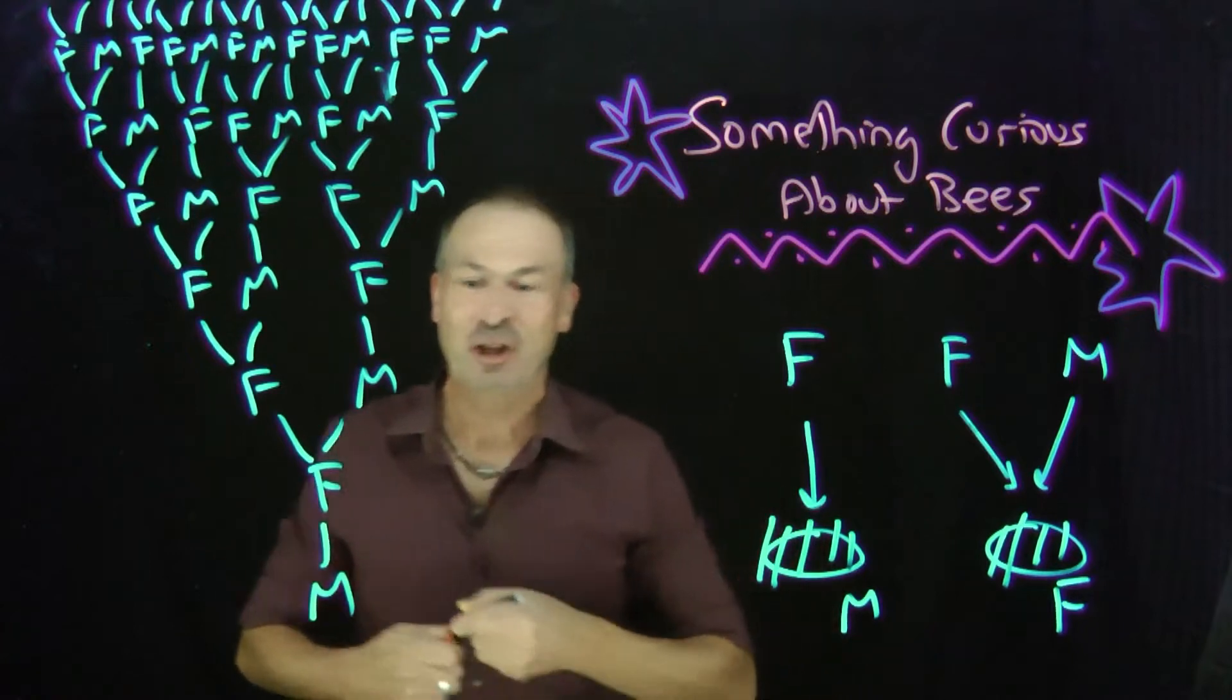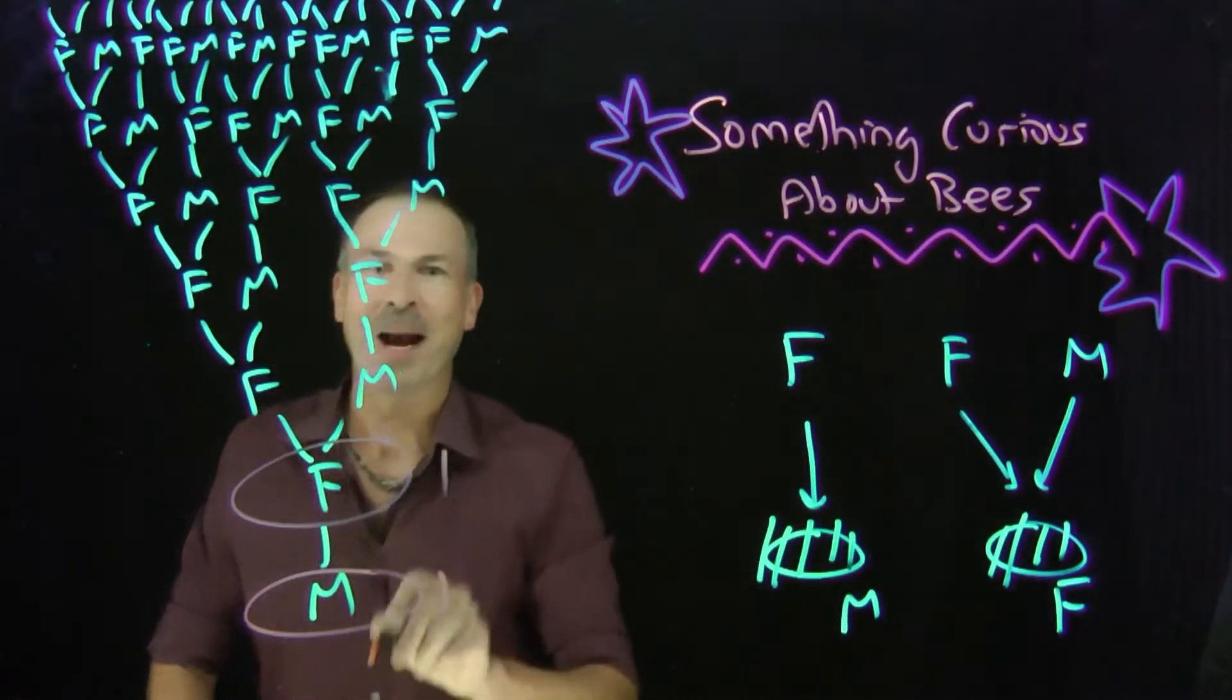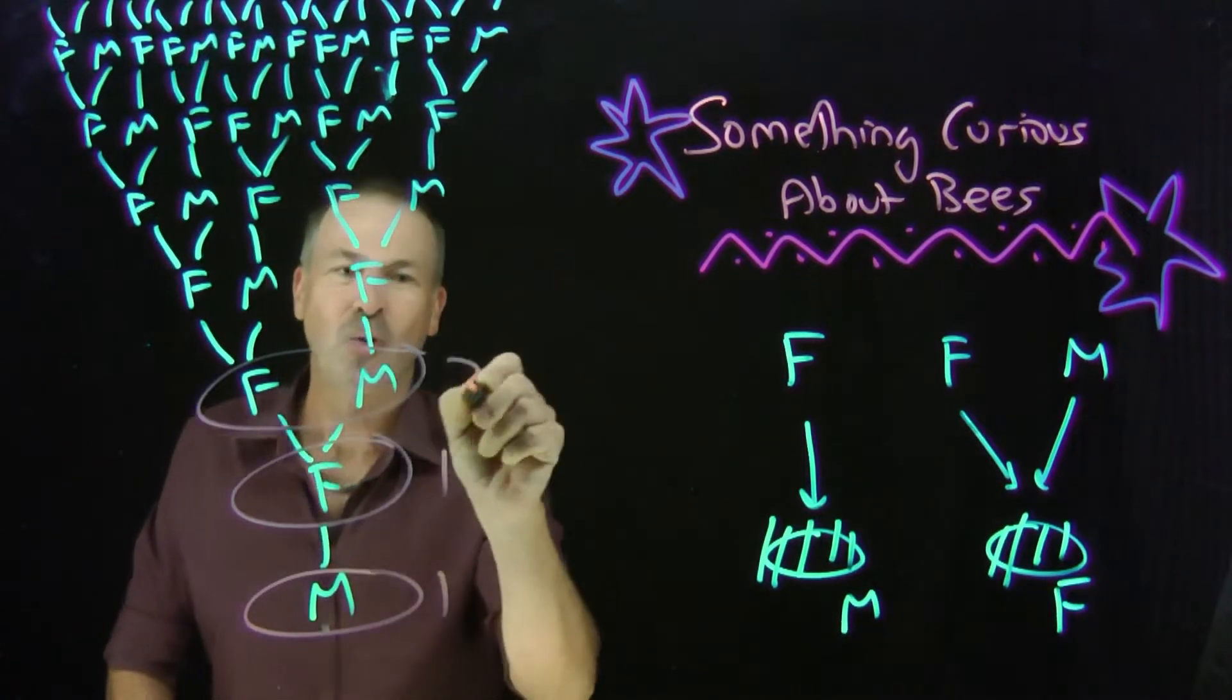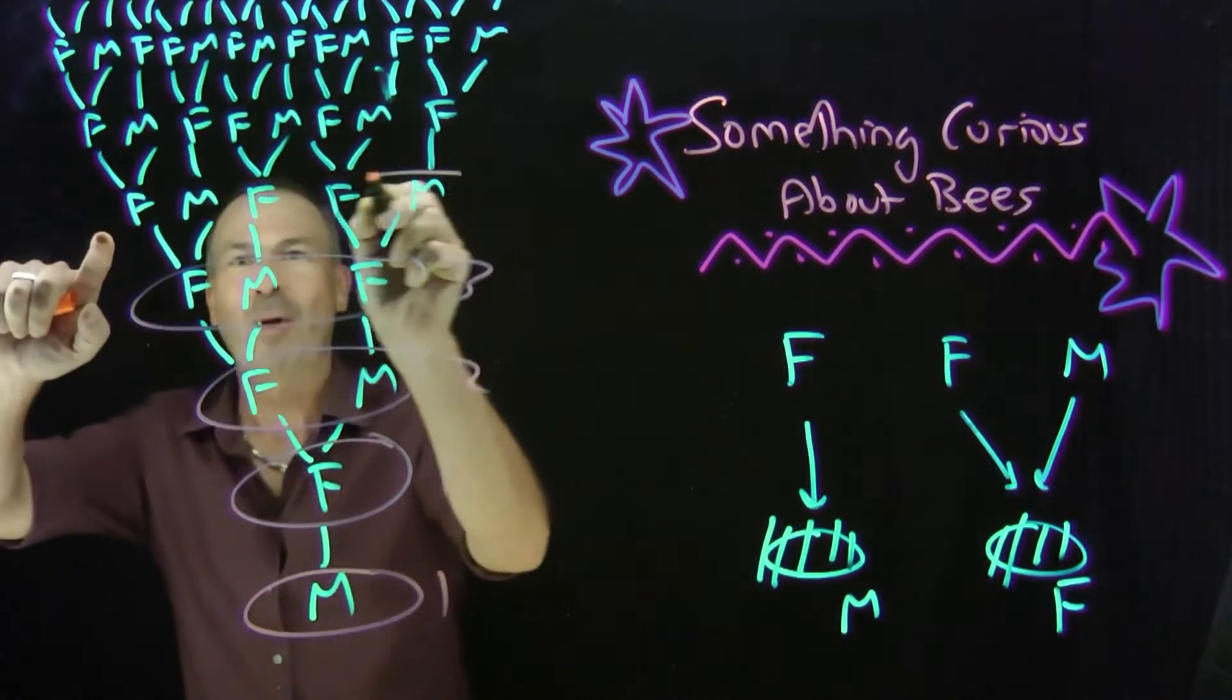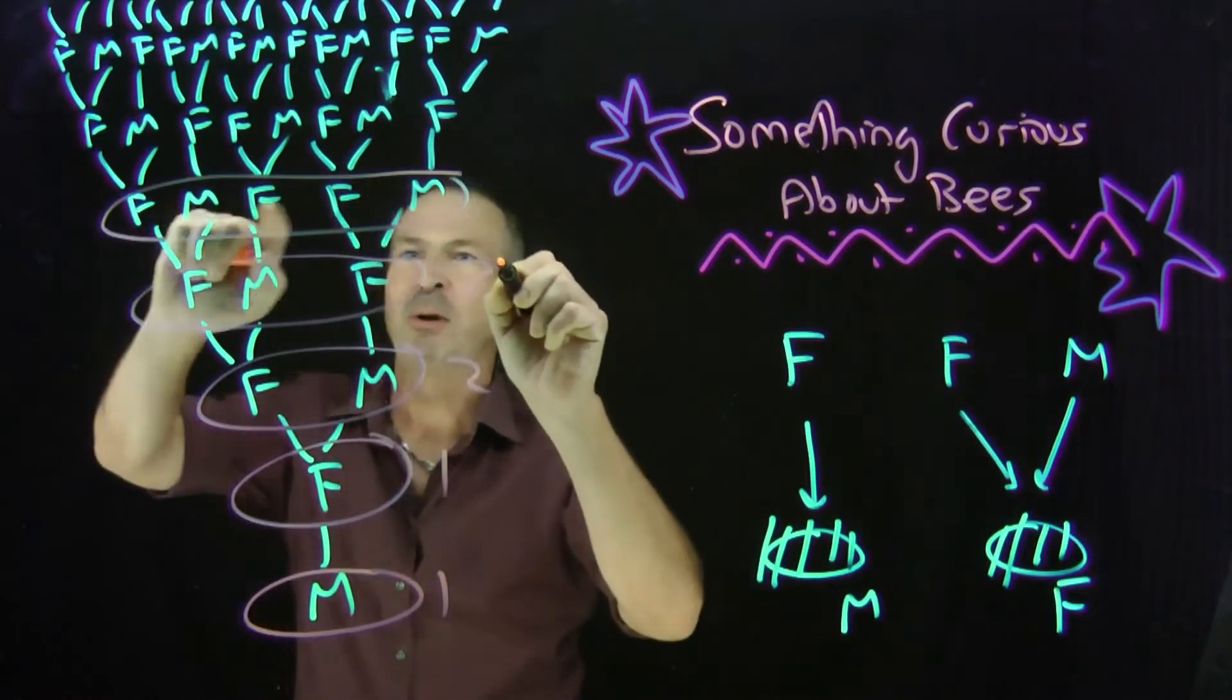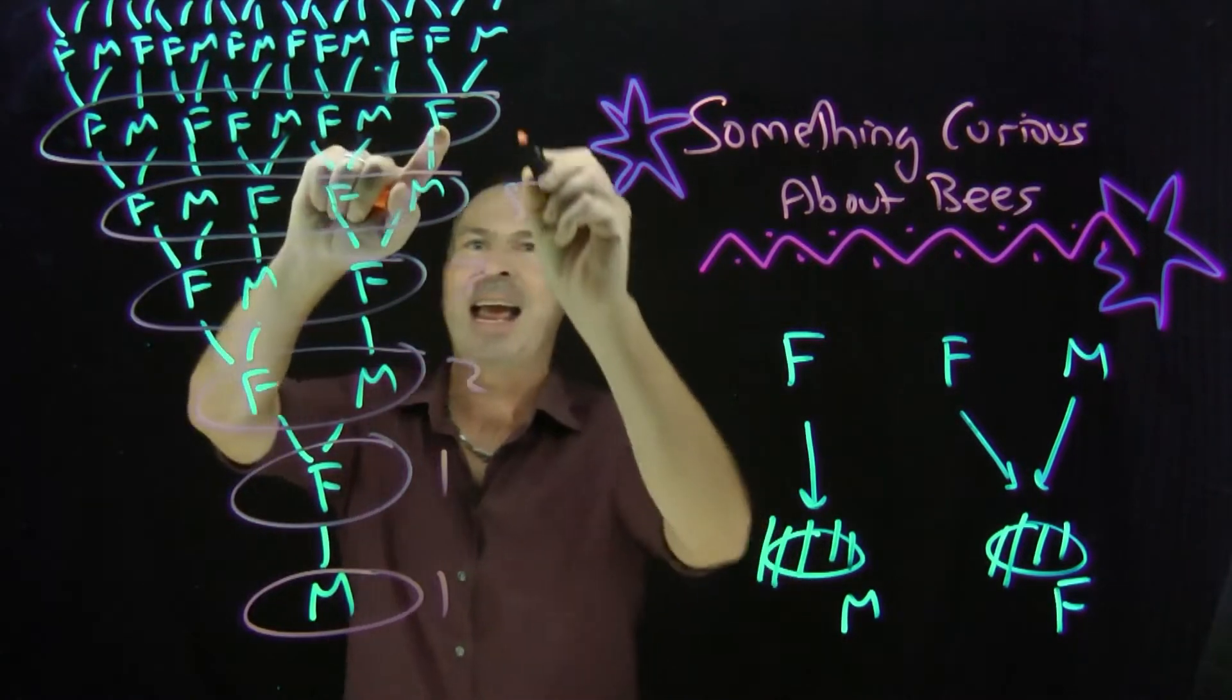So let's count the number of bees each generation. We start with one single bee, which has one parent. The bee has actually two grandparents and three great-grandparents. The number of great-great-grandparents is five. The number of great-great-great-grandparents is eight.